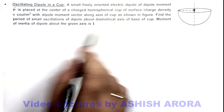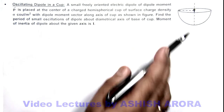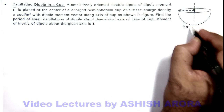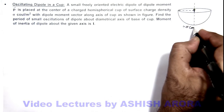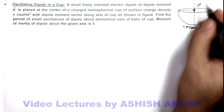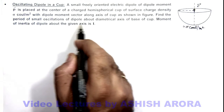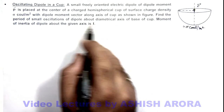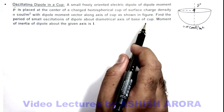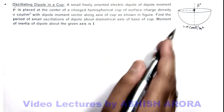The cup has a surface charge density sigma coulomb per meter square. As we can see in this figure, the cup is charged with charge density sigma coulomb per meter square, and this is the dipole p vector. We are required to find the period of small oscillations of the dipole about the diametrical axis of the base of the cup, and the moment of inertia of the dipole about the given axis is I.